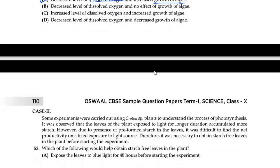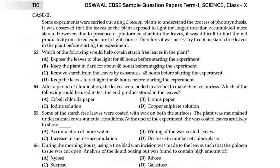Now moving to question 53. We have a new case study. It says some experiments were carried out using special plants to understand the process of photosynthesis. It was observed that leaves of the plant exposed to light for longer duration accumulated more starch. However, due to presence of preformed starch in the leaves, it was difficult to find the net productivity on a fixed exposure to light source. Therefore, it was necessary to obtain starch-free leaves in the plant before starting the experiment. They need a plant without starch so they can measure how much starch is created after exposing it to sunlight.